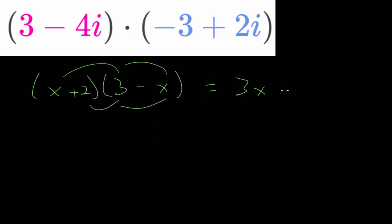And we get 3x minus x times x, or minus x squared, plus 6, and 2 minus x, that is minus 2x, and then we can combine like terms and write this in standard form.